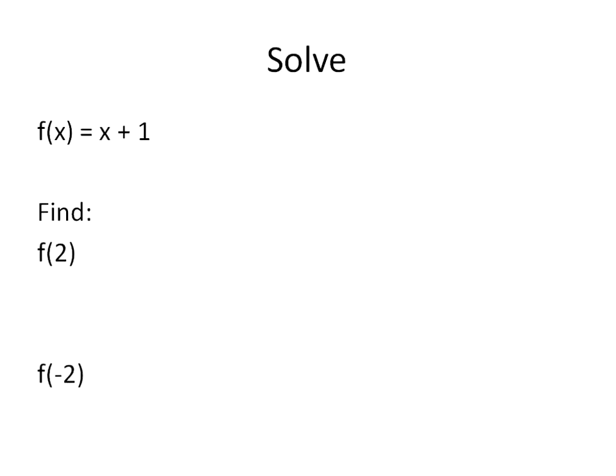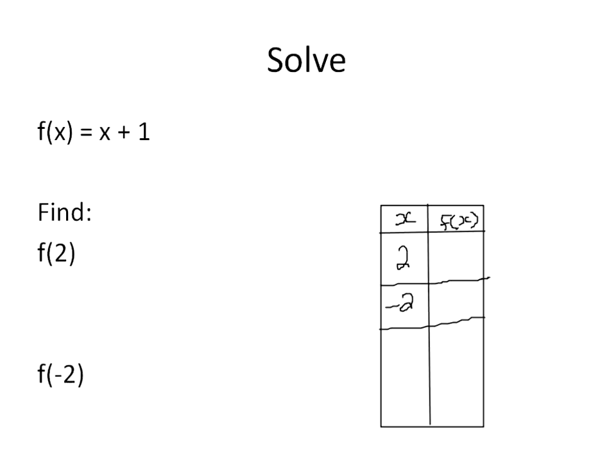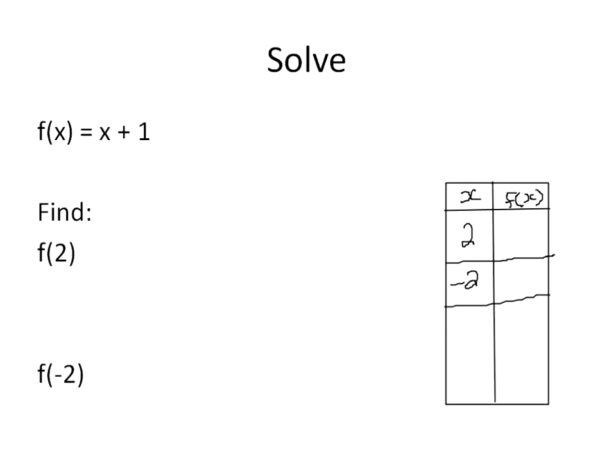The third type of question is when you're given the actual function. Now this could work out in one of two ways. You could either be given the function and have it written in a table, like what you see here. A table may look like this instead. You've got your x value here, you've got your f of x value here, and then you're given 2 and negative 2, and you're told to solve those.